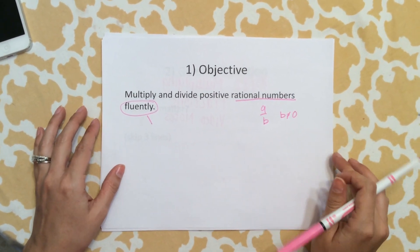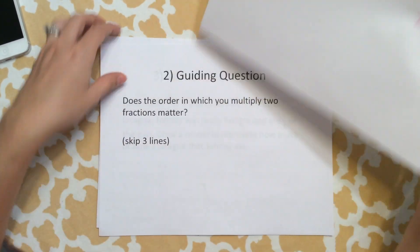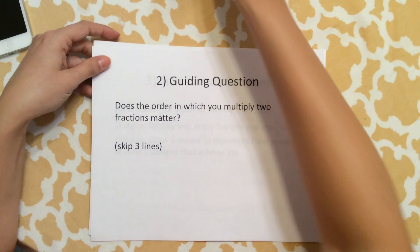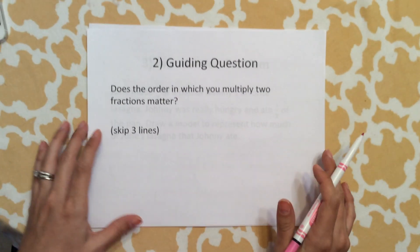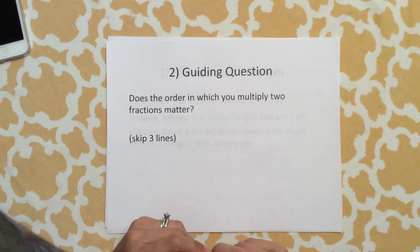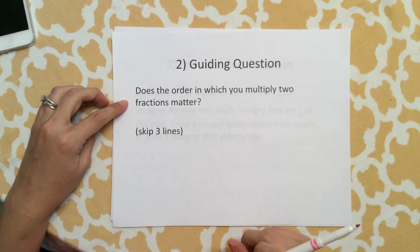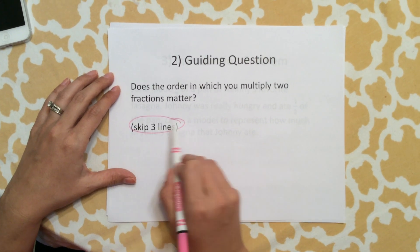Number two is your guiding question: does the order in which you multiply two fractions matter? You need to write the question and then skip three lines. We're going to come back and answer this. You may need to pause your video.